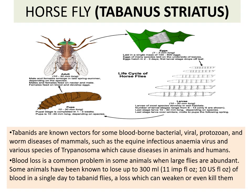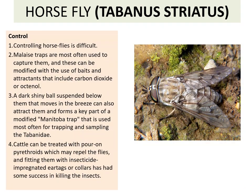Otherwise they feed on the nectar of plants. They are controlled by various means: traps are used to capture them. A dark shining ball suspended below them that moves in the breeze can also attract them and form a key part of a modified Manitoba trap, which is used most often for trapping and sampling Tabanidae.